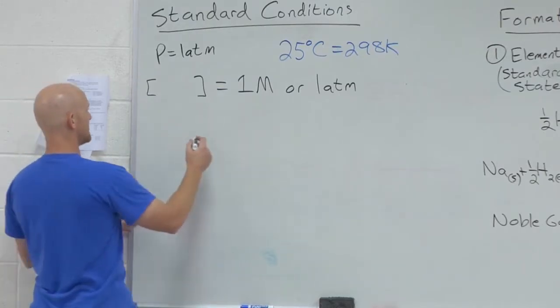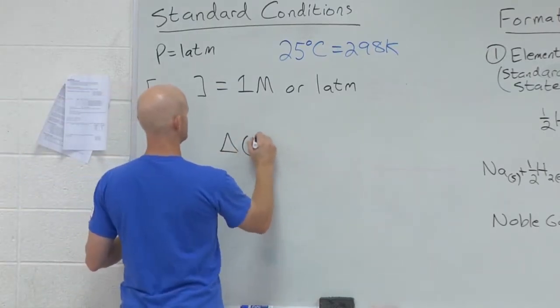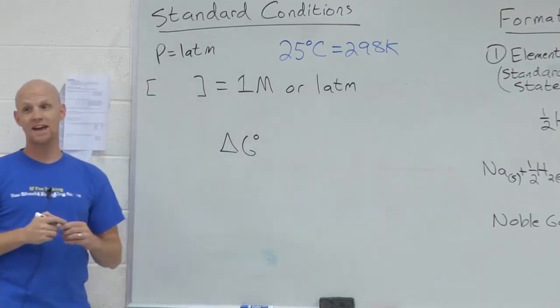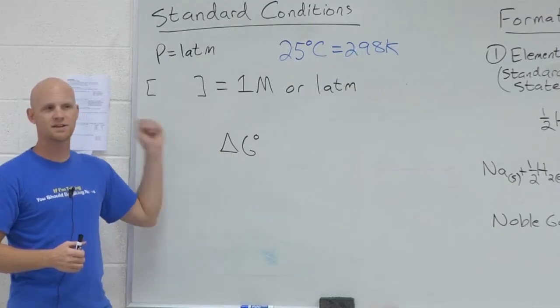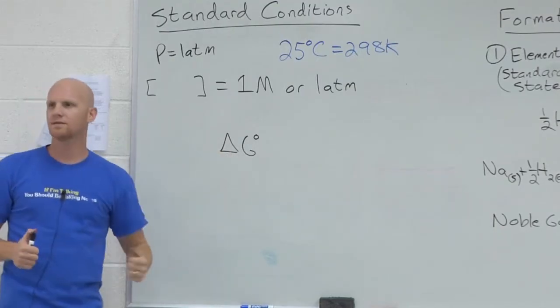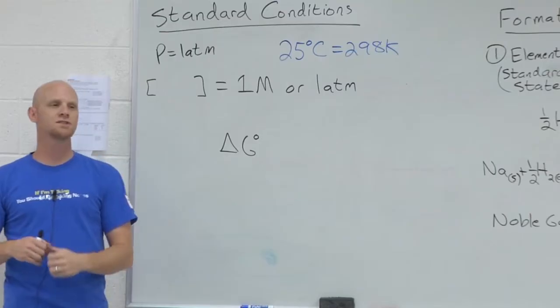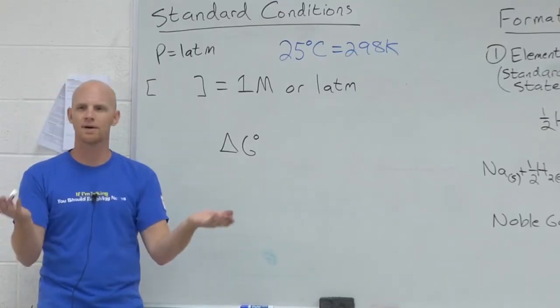And so when you see delta G standard, that's the conditions that it corresponds to. You have one molar or atmosphere concentrations of all reactants and all products, equal amounts of both.